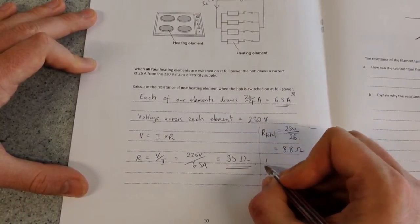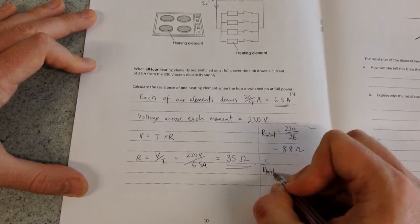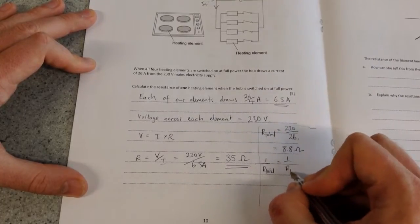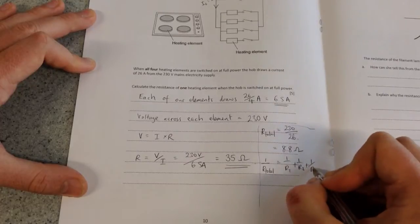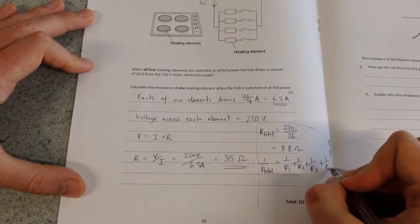You then, this is why I'd avoid doing this method, because it's a bit trickier. You then need to know that there is this equation that 1 over the total resistance is 1 over R1 plus 1 over R2, etc. So in this case, we've got 4 of the things. So 1 over R4.